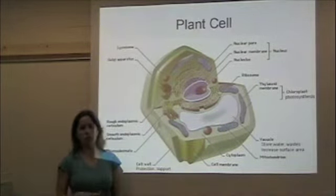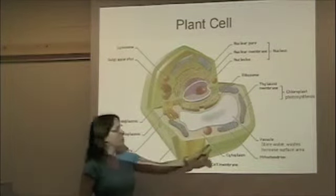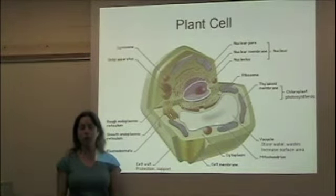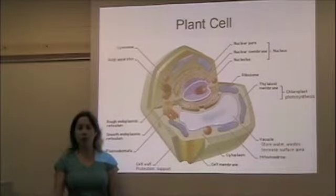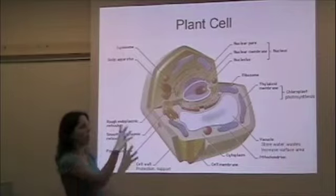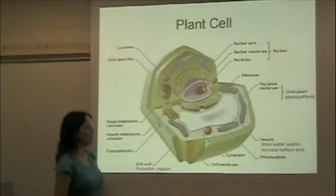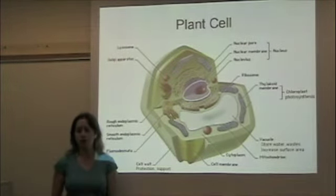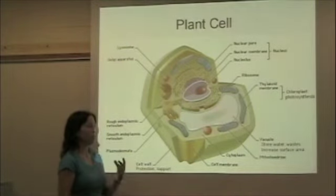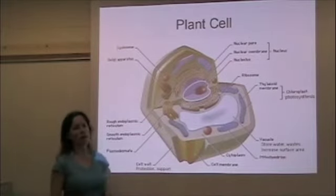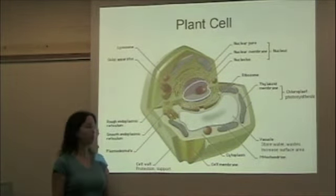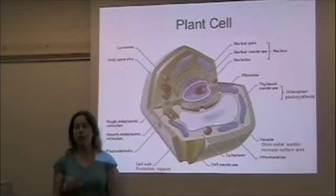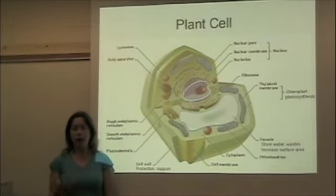The first additional structure, which is really important, is the chloroplast. The chloroplast's job is photosynthesis. Plants are autotrophic organisms, so they need to create their own food by capturing sunlight and converting that energy into carbohydrates — and that's what happens in the chloroplast. There's also the vacuole, whose main purpose is storage: it holds a lot of water, some protein, some waste, and can also act to increase the surface area of the plant cell. The last structure is the cell wall, which surrounds the plasma membrane and gives the plant extra support and stability.